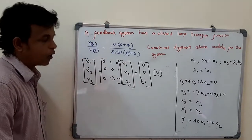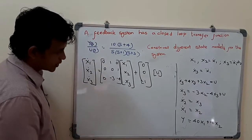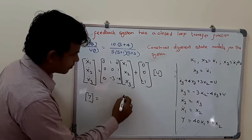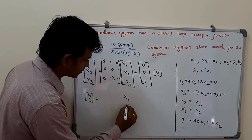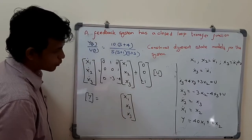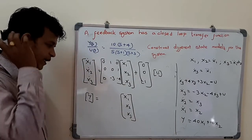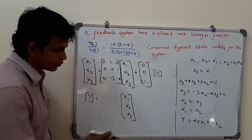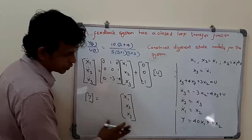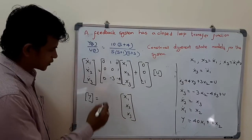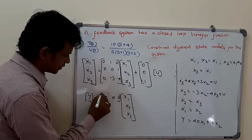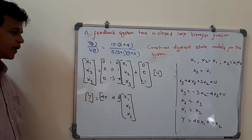From the output equation we write the output equation y = 40x1 + 10x2. We have one output y and the state vector has three components x1, x2, x3. The output does not directly depend on input u, so the D matrix is eliminated. We have y = Cx, giving output matrix C = [40, 10, 0].